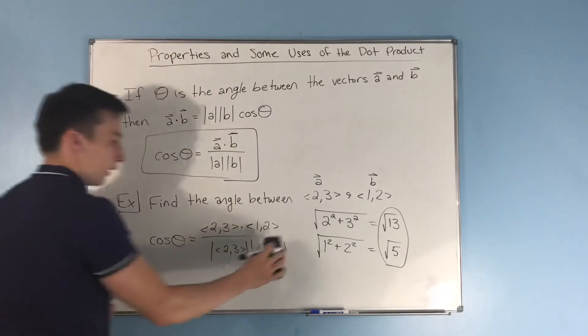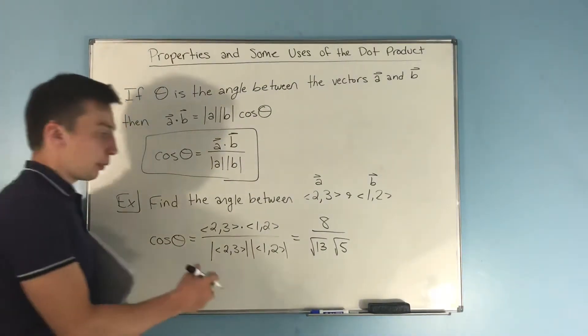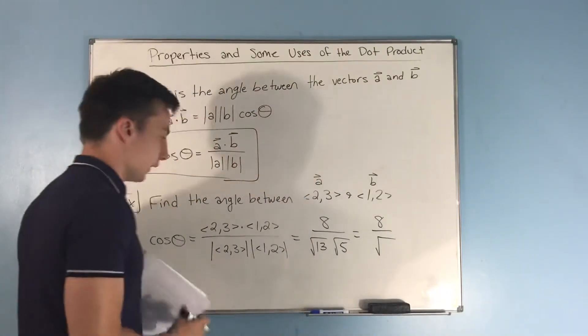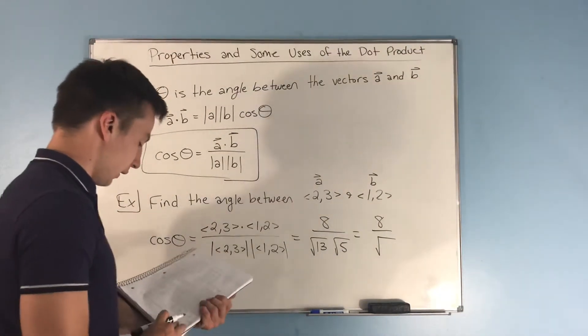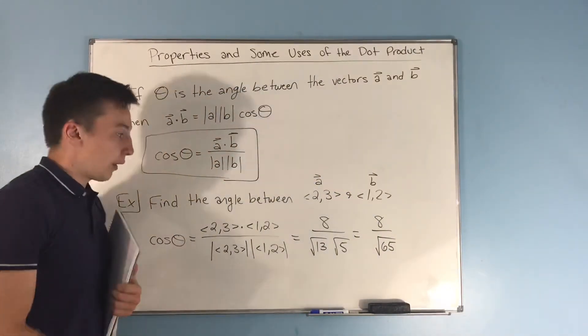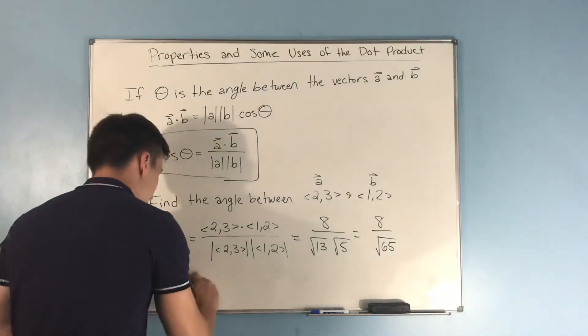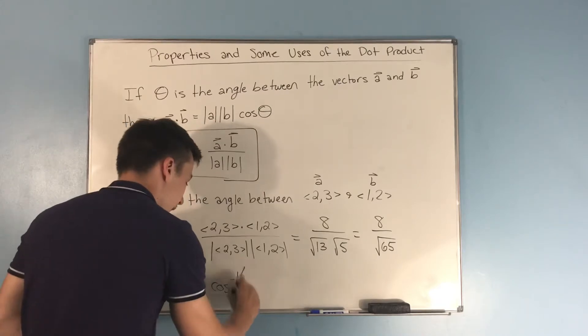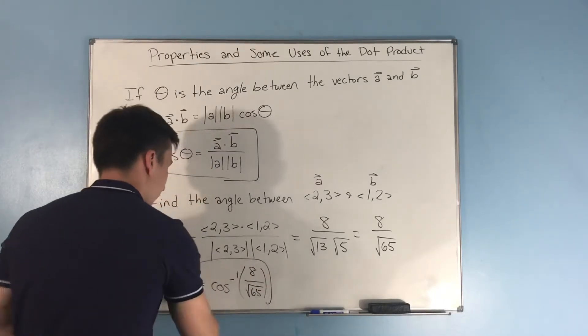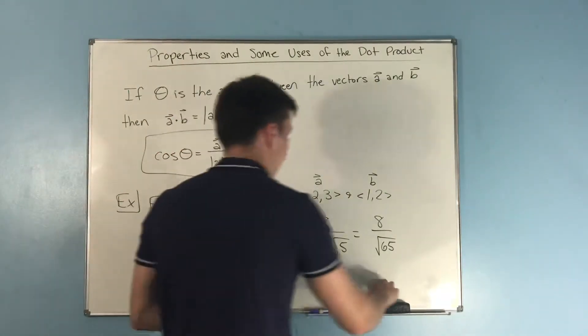So let's get all this extra work out of the way and focus on that. So that is what we end up with. Now we can simplify this a little bit by combining these radicals and getting 8 over the square root of 13 times 5. Now all we have to do is take the inverse cosine of each side. And we get that theta is equal to the inverse cosine of 8 over rad 65, and there you go. That's your answer.